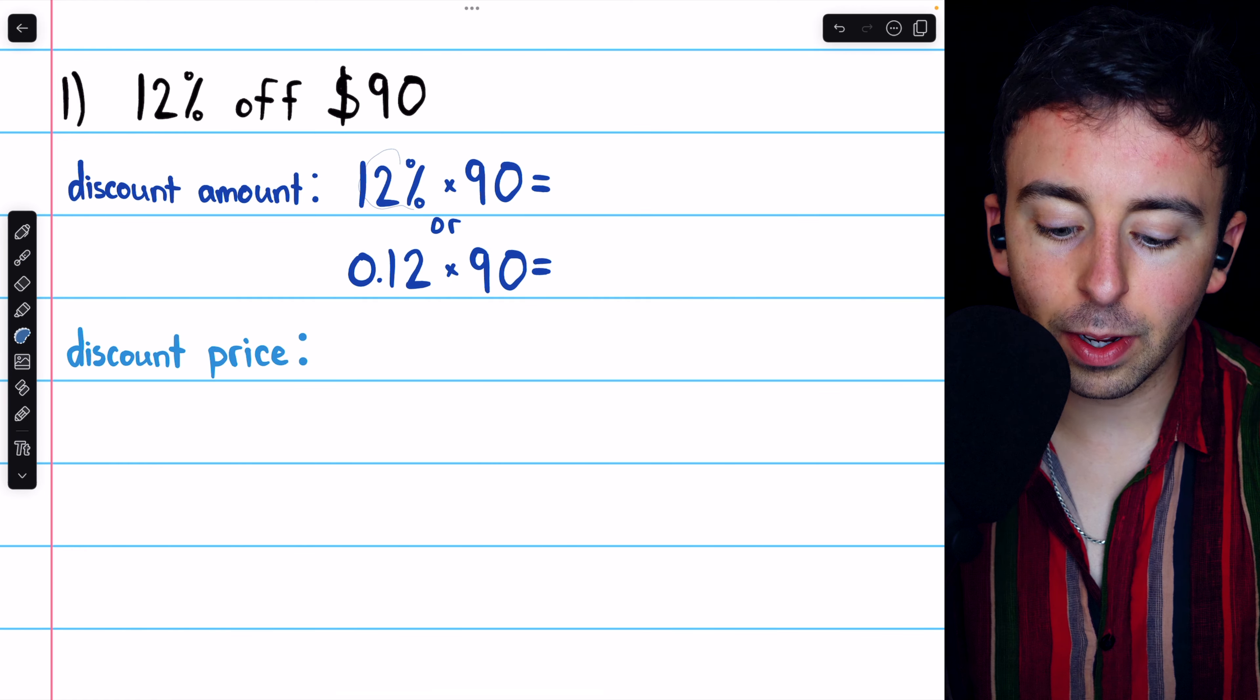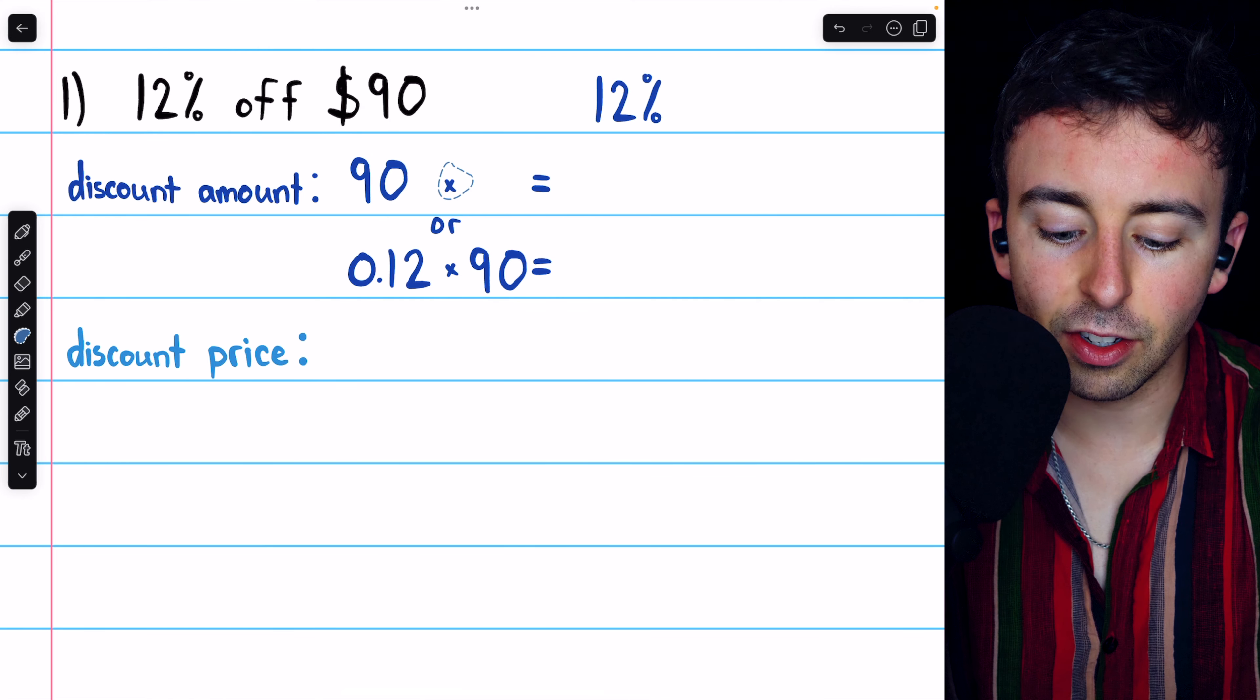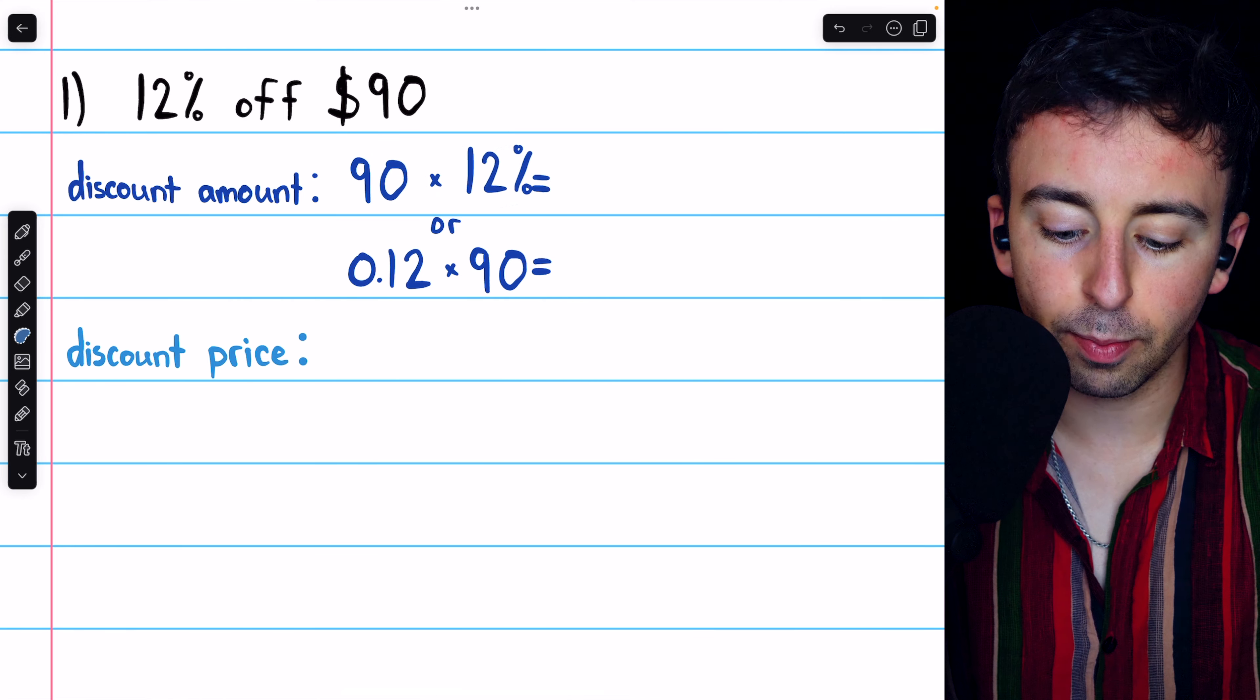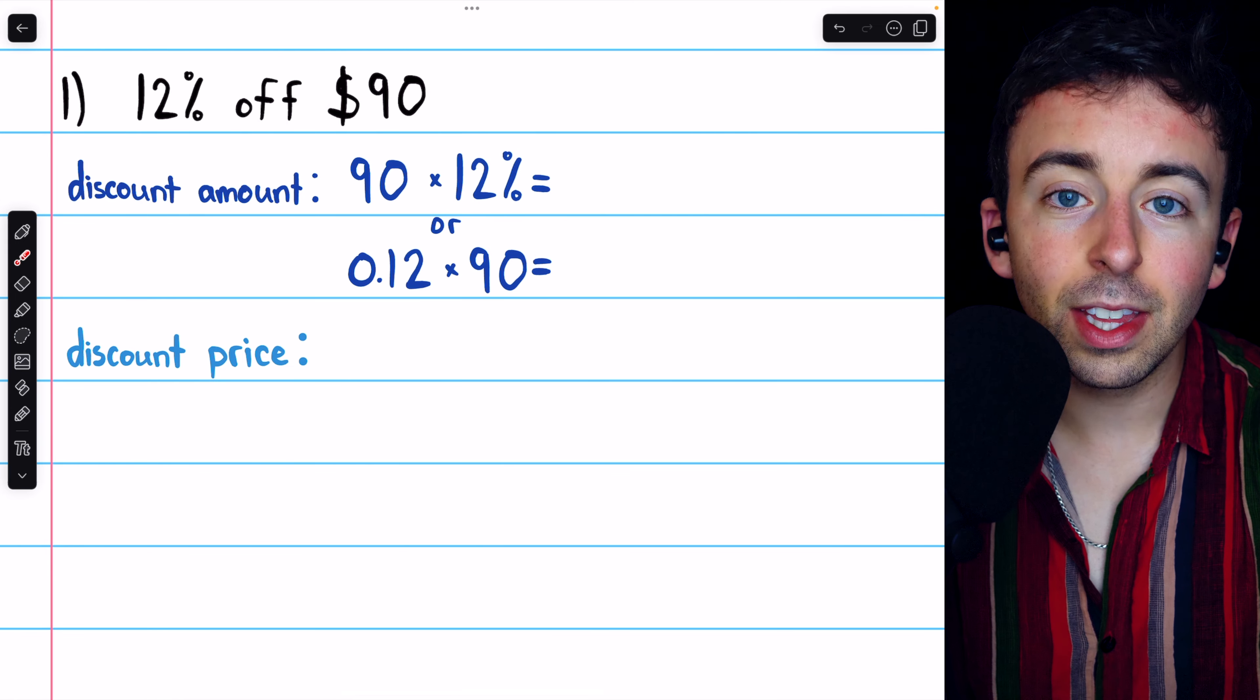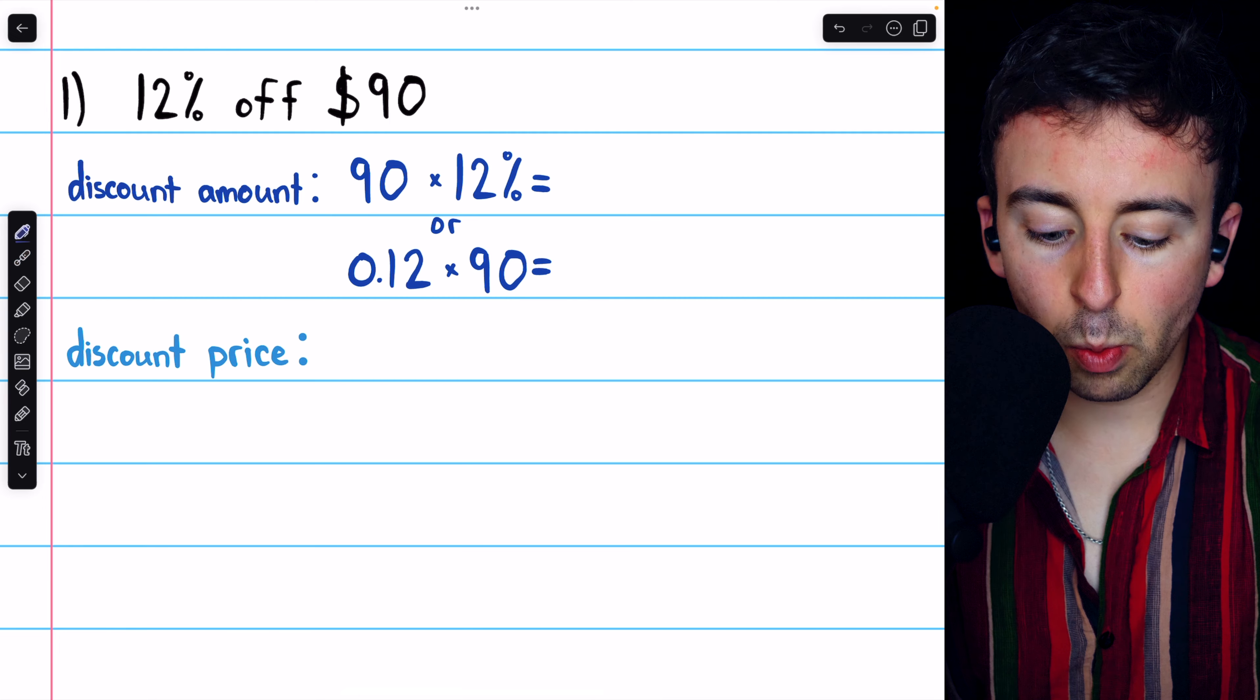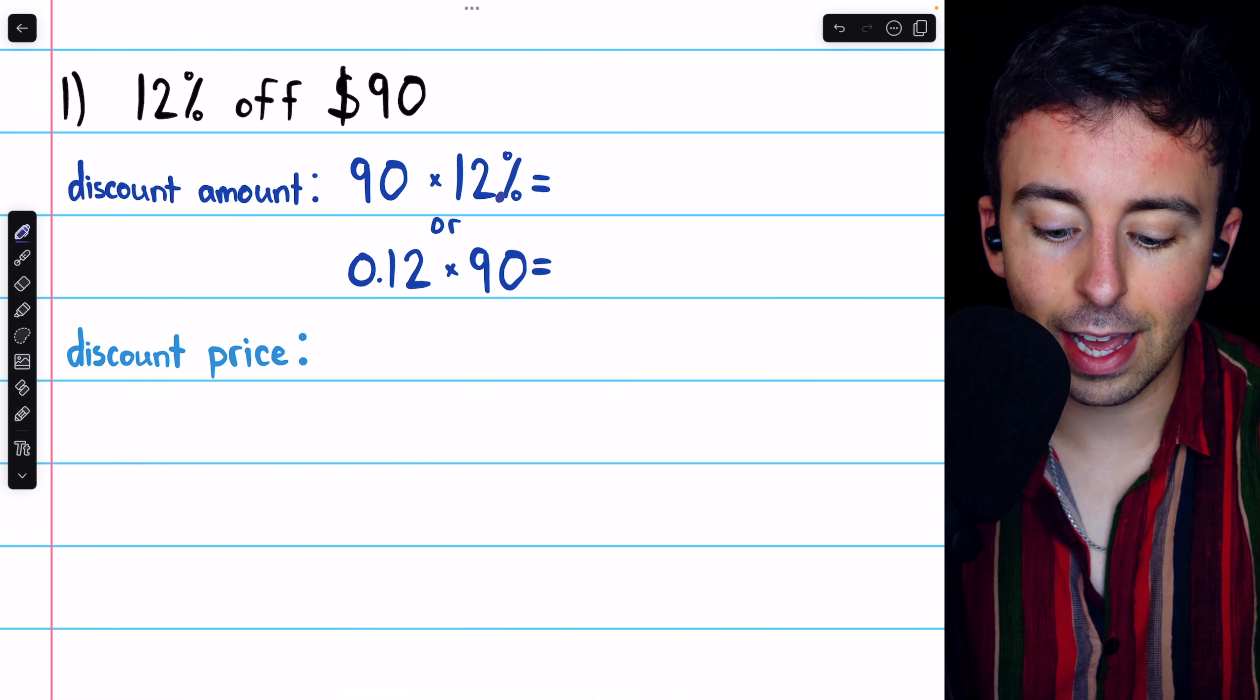Again, if you're using a calculator with a percent key, you're going to have to put the percent last and do 90 times 12%. If you're using a decimal, 0.12, then the order doesn't matter. And remember where that 0.12 comes from.